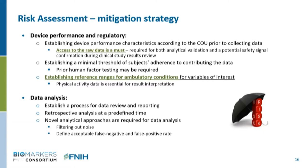Access to raw data is essential and serves two purposes: first, to verify that the concept being measured is captured accurately; and also for verification if there is a safety signal. Prior human factor testing is required because if a device is not convenient or difficult to manage by study subjects, there will be missing data. Interpretation of ambulatory data is far more challenging than the resting and supine protocol. For data analysis, there is a need for data review and reporting, novel analytical approaches that include filtering out noise, and defining acceptable false positive and false negative rates to find the right balance.